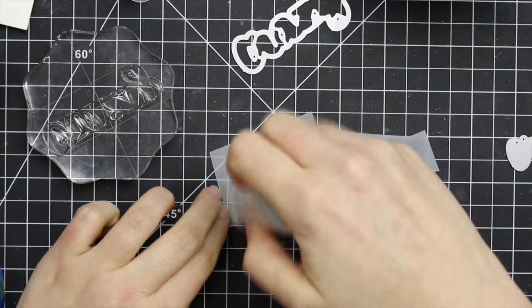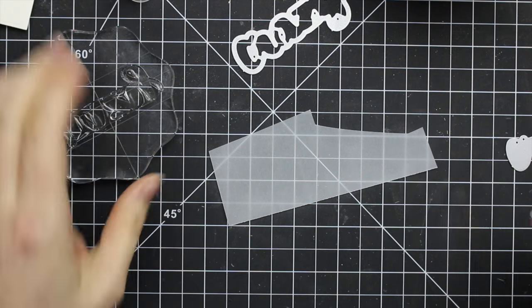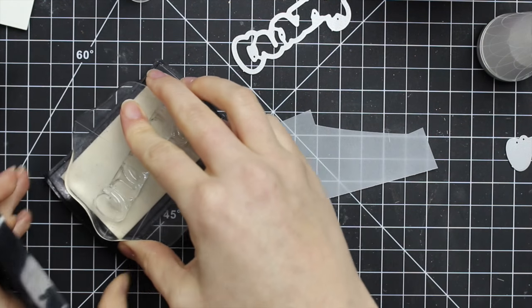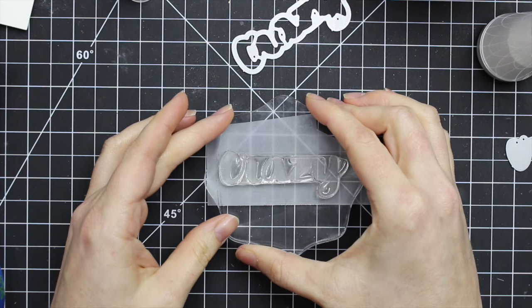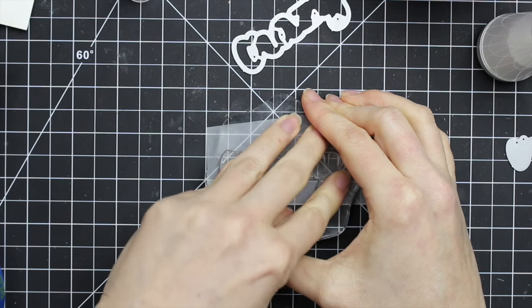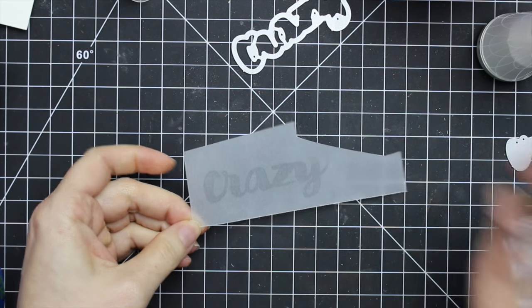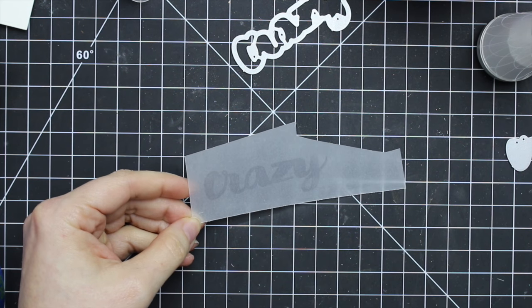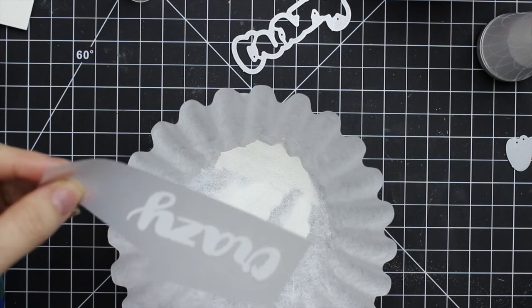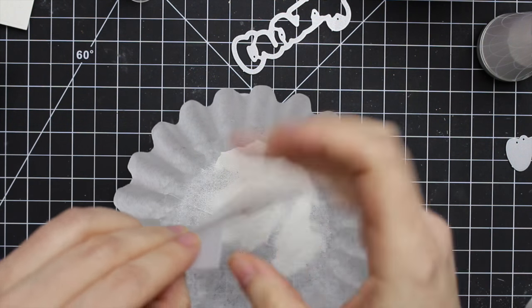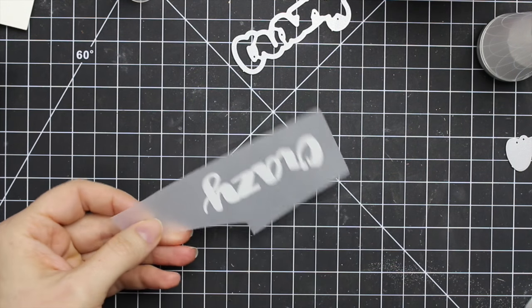And then for the second card, I grabbed a scrap of vellum and I coated that with the anti-static embossing powder. And then I'm stamping the large crazy stamp from that set with the Versamark ink and then coating it with the same white embossing powder. So getting that all covered, making sure I have it covered completely.